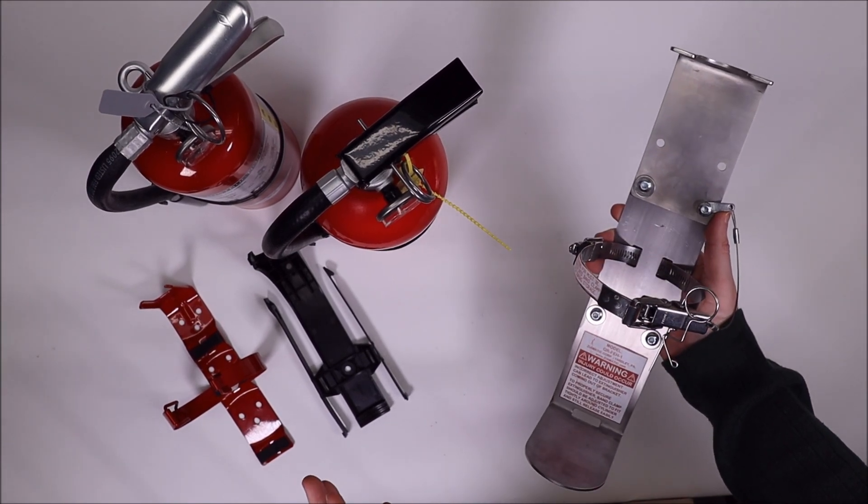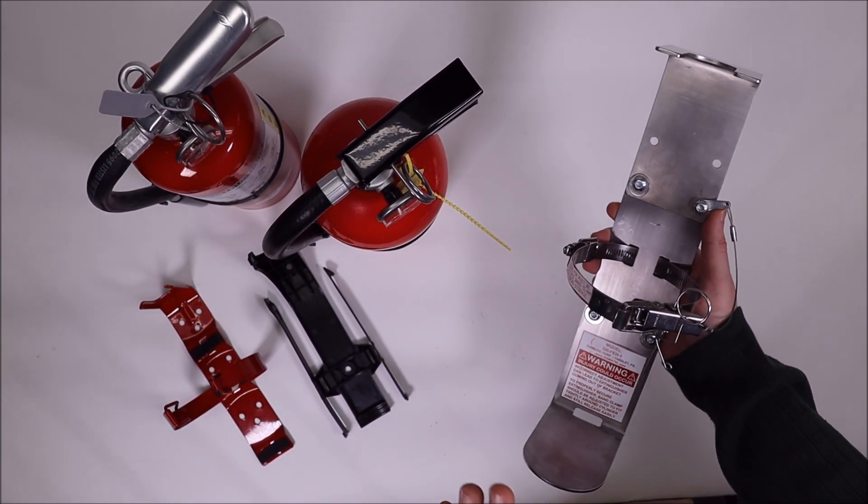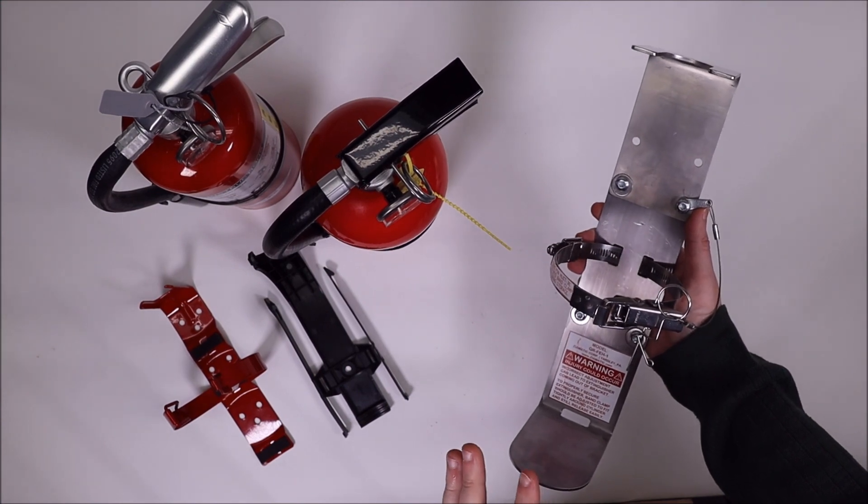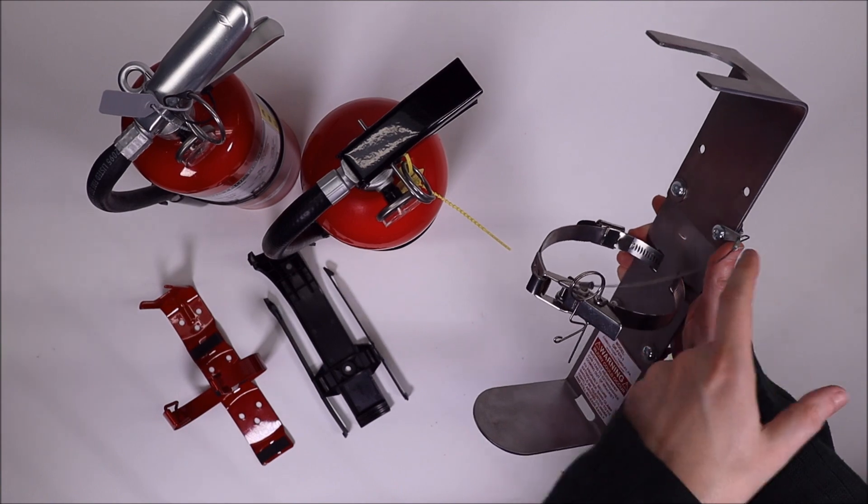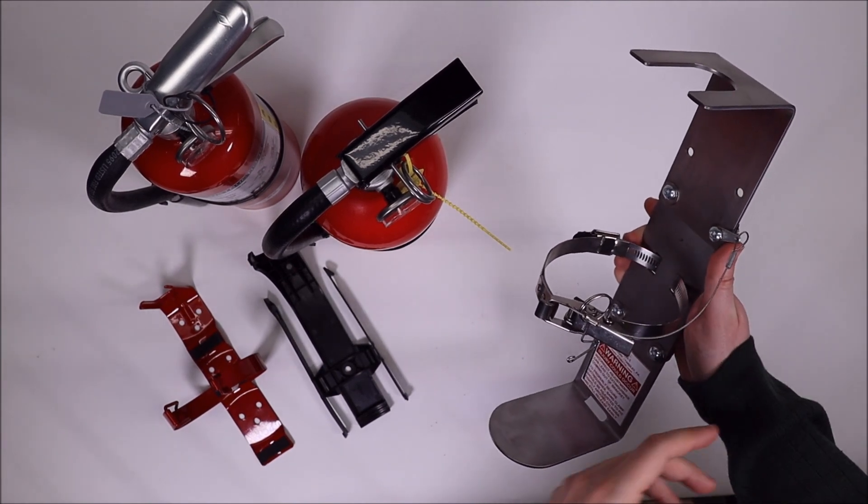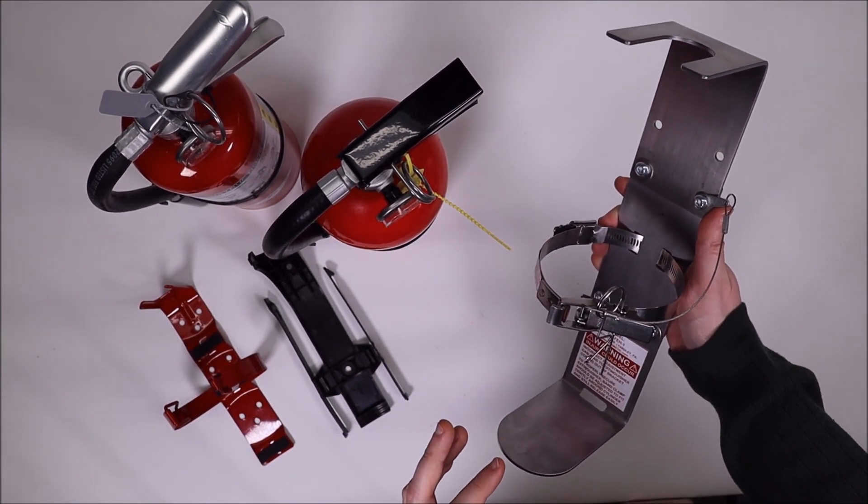All right, so let's get into the components. It's a two-piece adjustable stainless steel bracket. You can see the upper bracket here, the lower bracket here. It slides up and down depending on which brand of extinguisher you're holding.